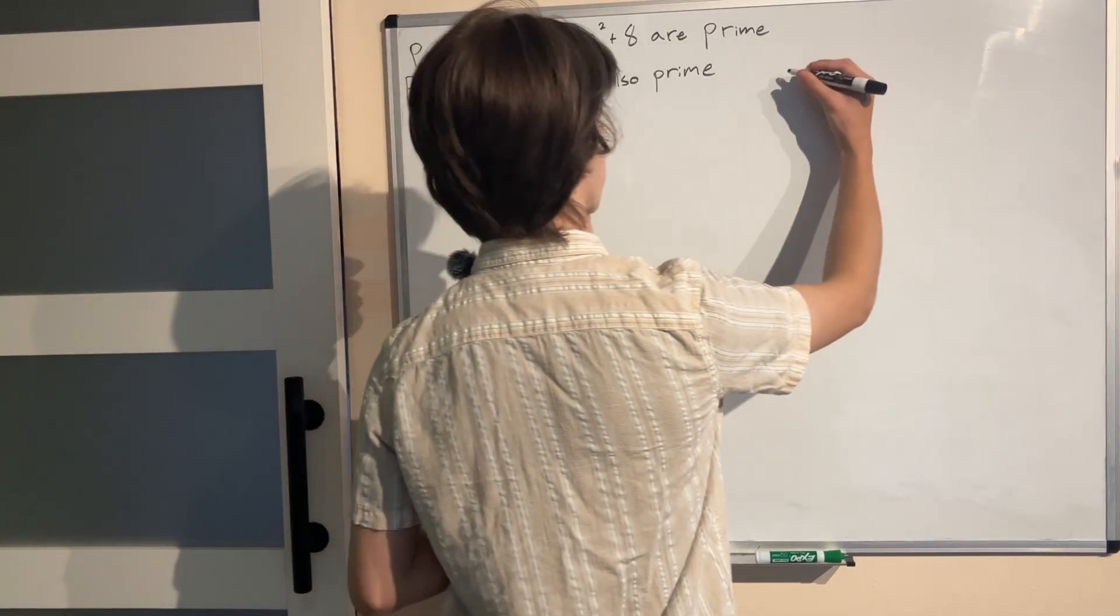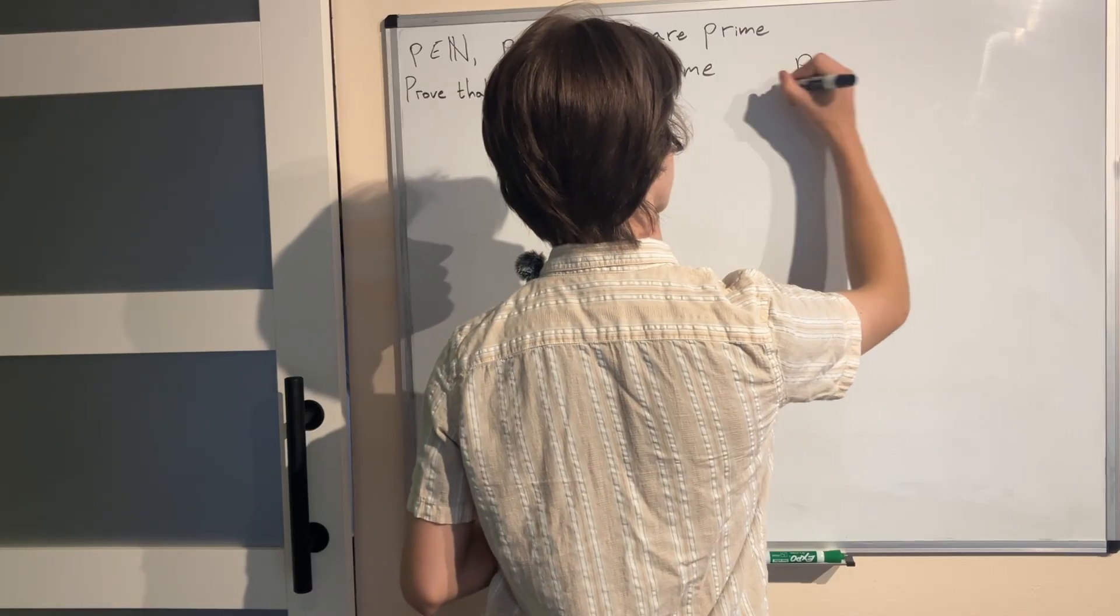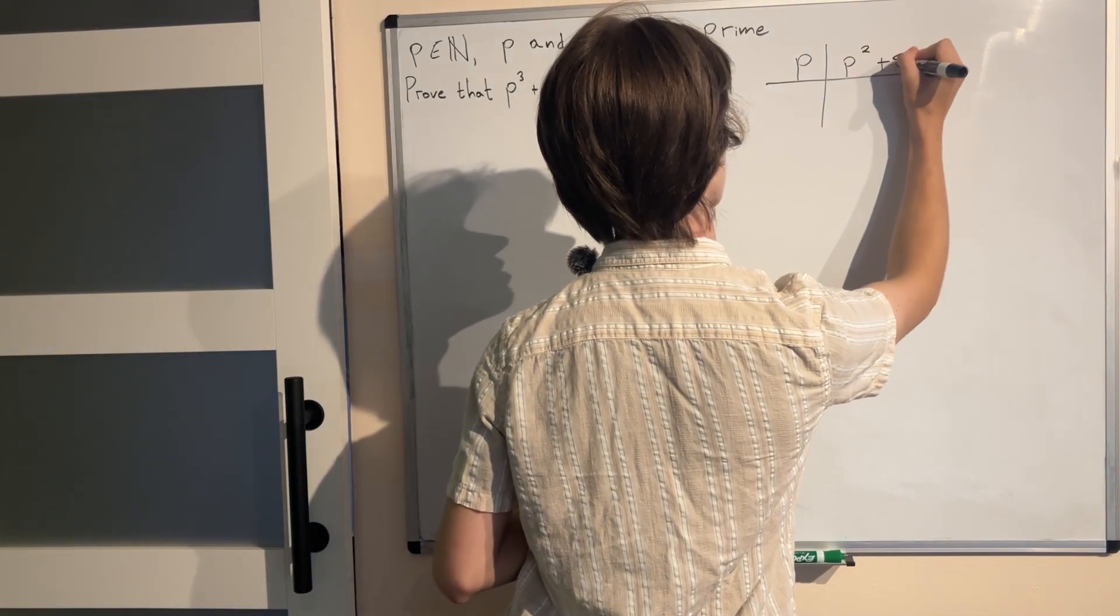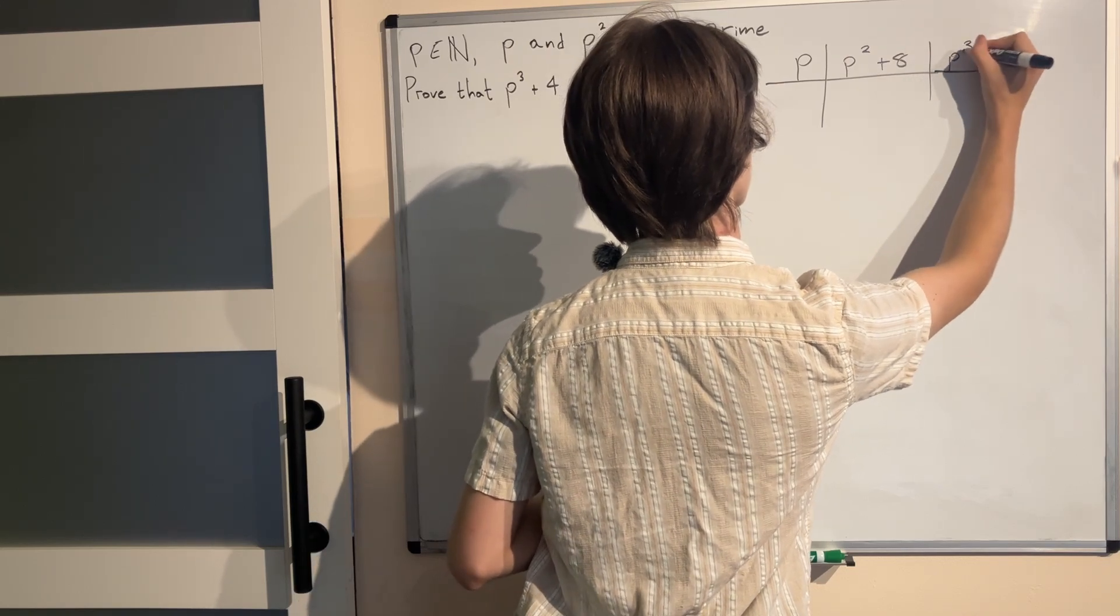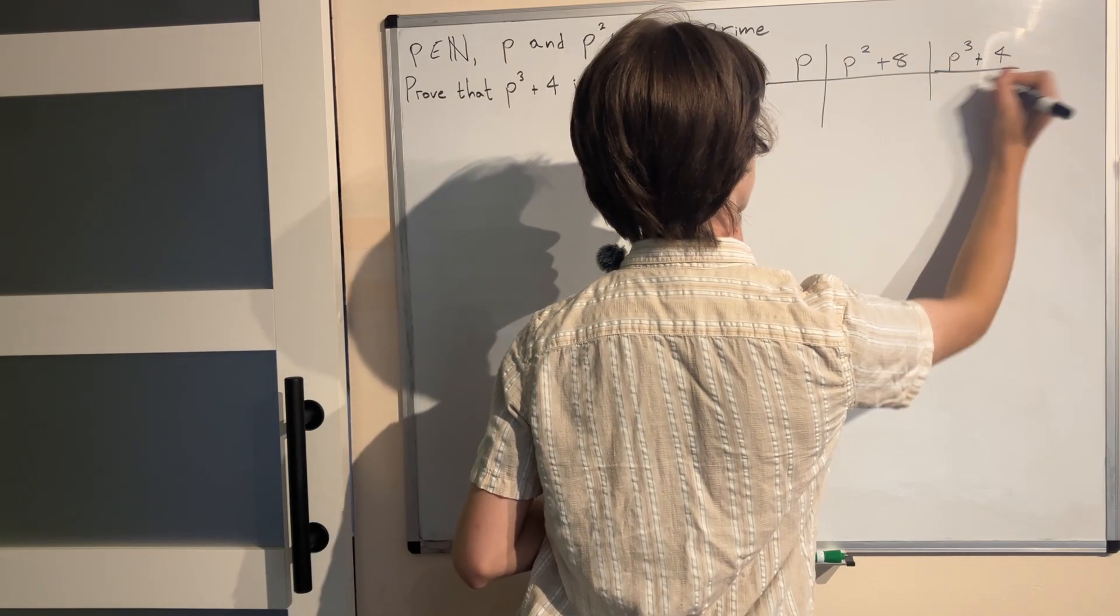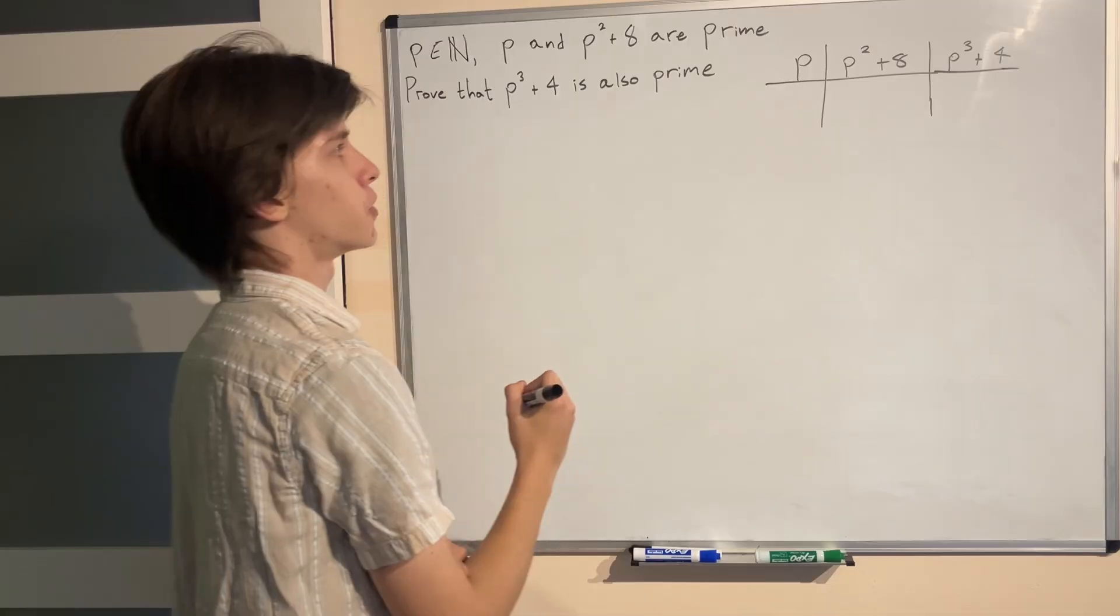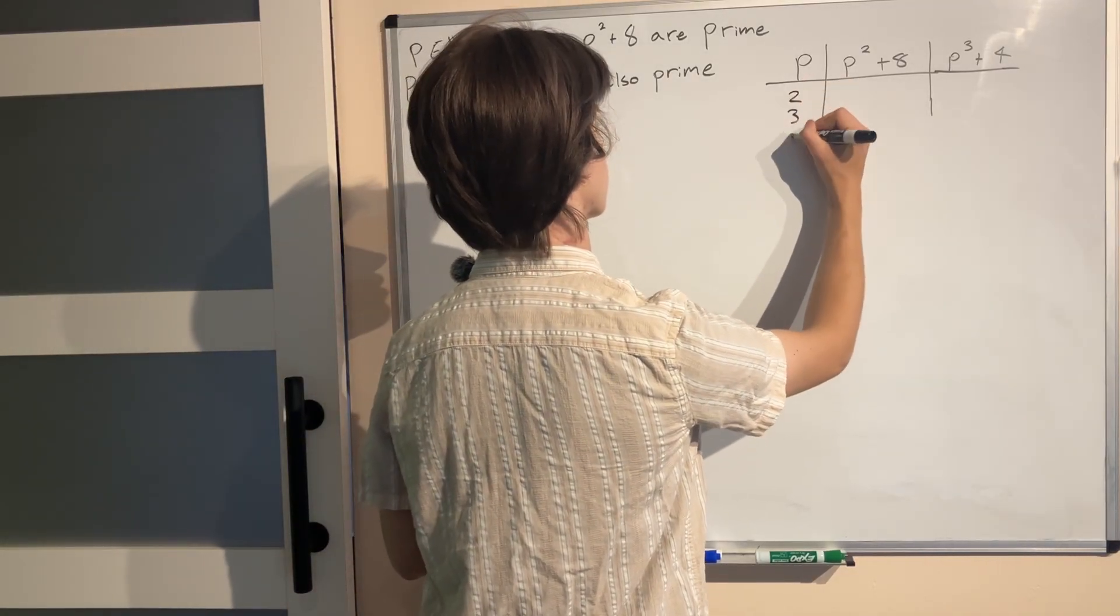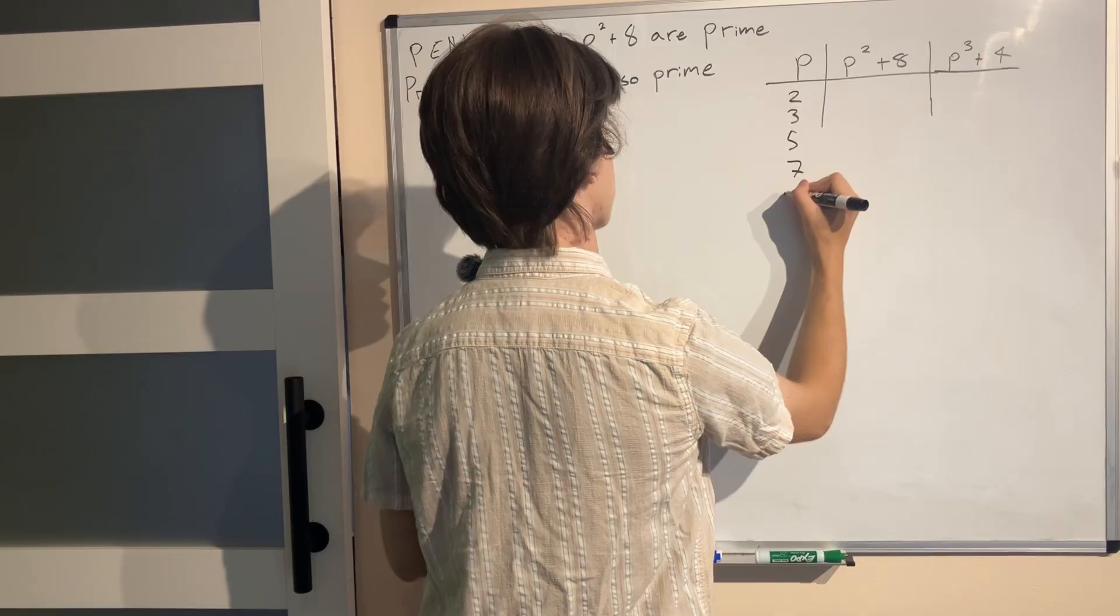So let's make a table here with p and we're going to separate it with p² + 8 and also with p³ + 4 right here. And let's test the first five primes. So from 2 to 11. 2, 3, 5, 7 and 11.